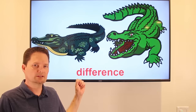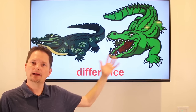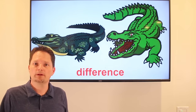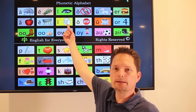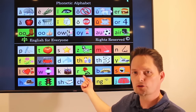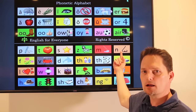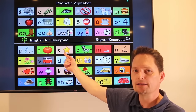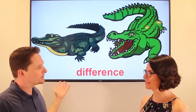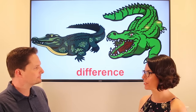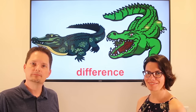Example: difference. We don't say 'difference,' it's two syllables: 'difference.' What's the difference between a crocodile and an alligator? I don't know the difference. Do you know the difference between a crocodile and an alligator? Very good.